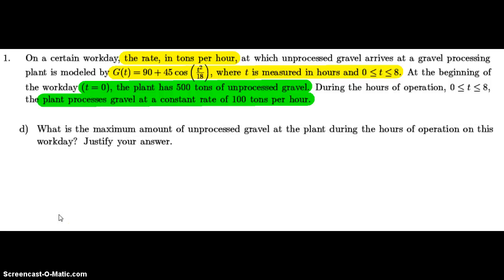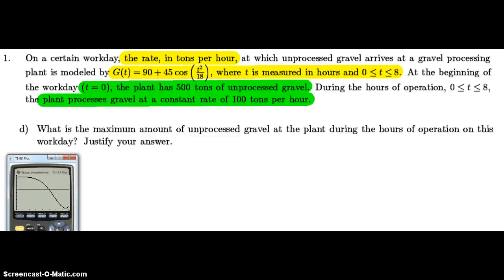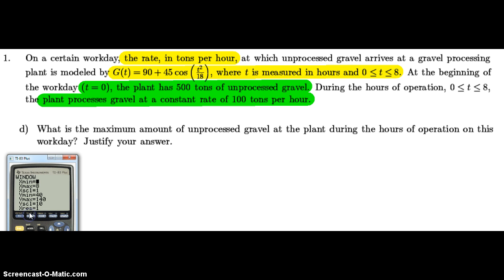Part d, the last part of problem number one: what is the maximum amount of unprocessed gravel at the plant during the hours of operation on this workday? Here's my calculator with the graphs shown. The curve starting up high around 135 and going down to about 45 then back up is the g of t function. The horizontal line is the output function — the constant 100 tons per hour. The vertical axis is tons per hour and the horizontal axis is hours. I set the domain from 0 to 8, y min and y max to 40 and 140, and the scale tick marks to 10 for easy reading.